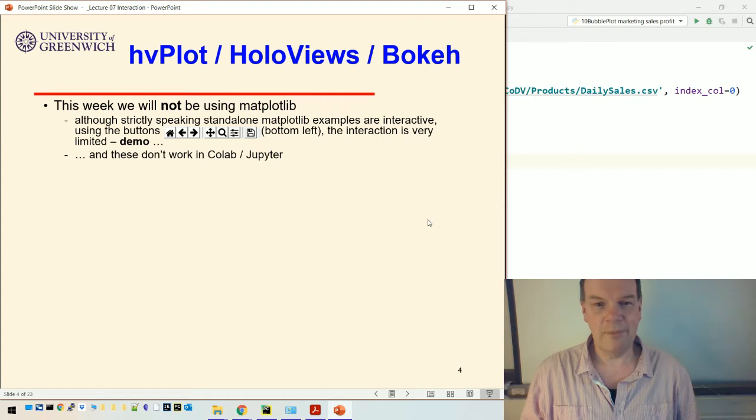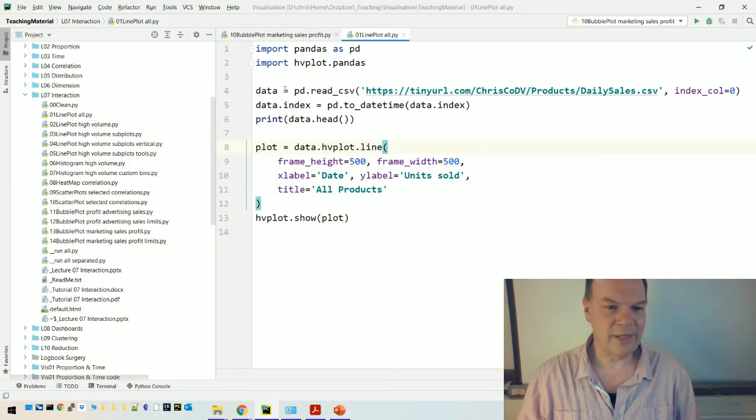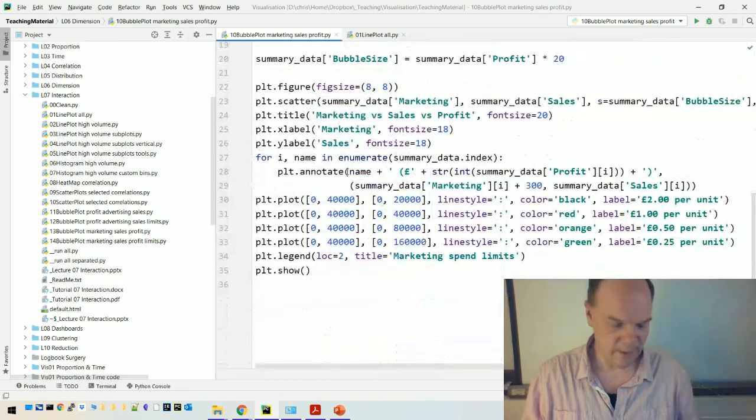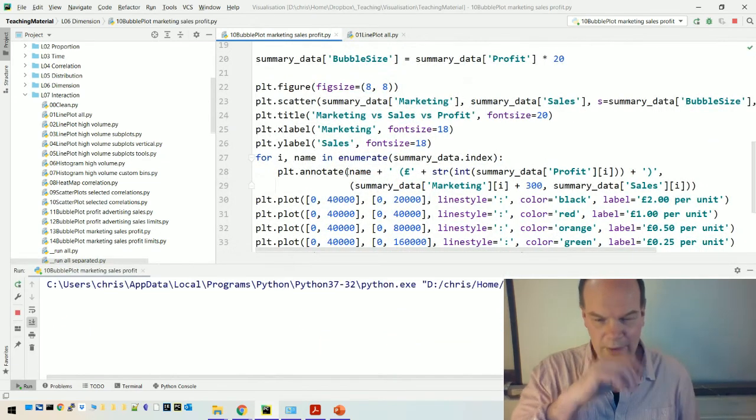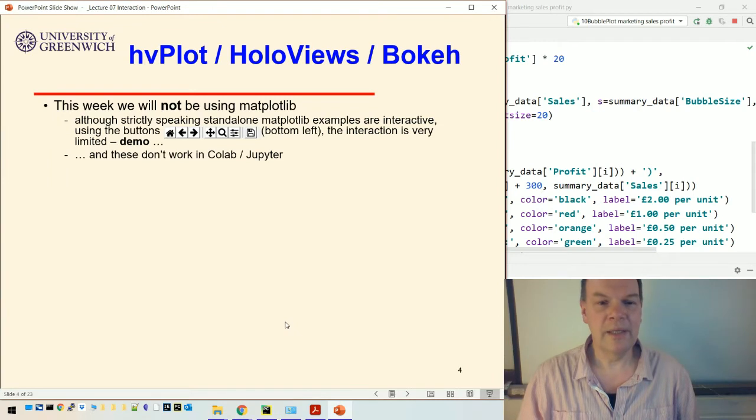So this week we're not going to be using matplotlib. Actually, strictly speaking, if you're using the standalone version that I've been using in PyCharm, so whenever I run visualizations from PyCharm, you'll see that the matplotlib examples I get are actually interactive. There's some buttons at the bottom that allow me to do that. Unfortunately those don't work in Colab and Jupyter. Let me just show you an example of that.